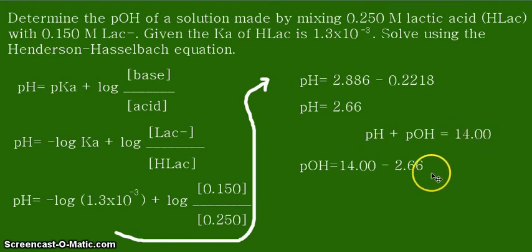We simply rearrange this equation and arrive to this equation here. pOH is equal to 14.00 minus the calculated pH that we had earlier, which is equal to 2.66. That will give us the answer, and the answer is 11.34. So the pOH of the given solution here, prepared by mixing lactic acid and its conjugate base, is equal to 11.34.